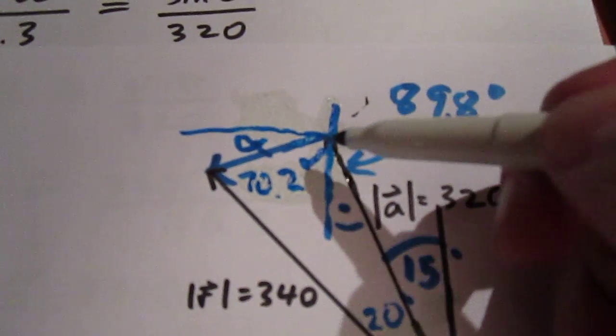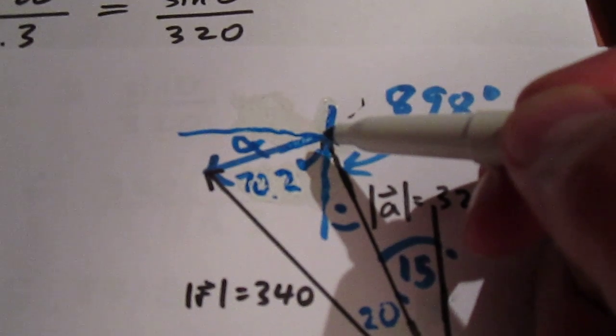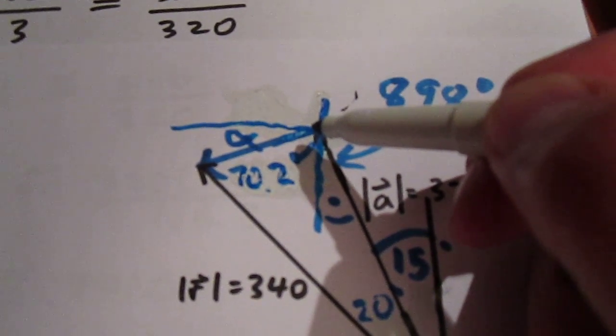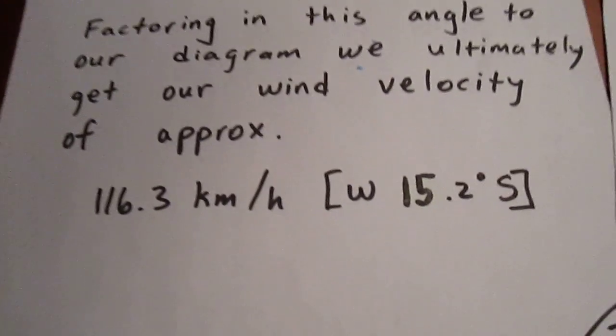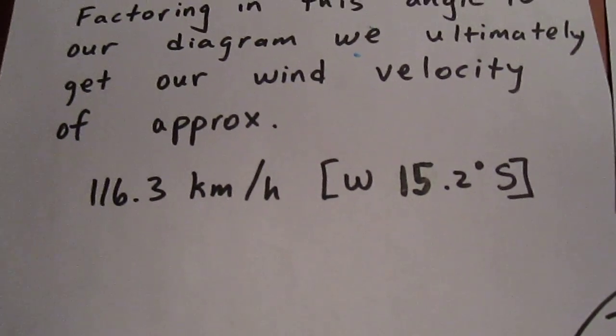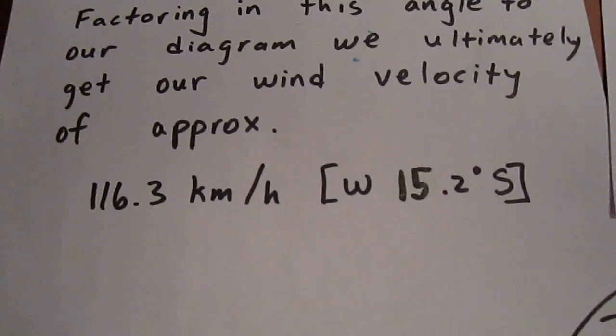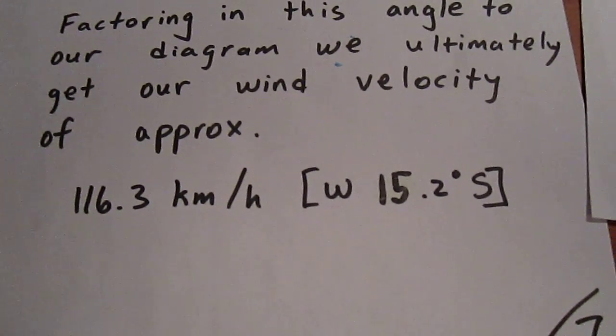So we have a wind traveling in a direction west 15.2 degrees south. So our final velocity is approximately equal to 116.3 kilometers per hour west 15.2 degrees south.